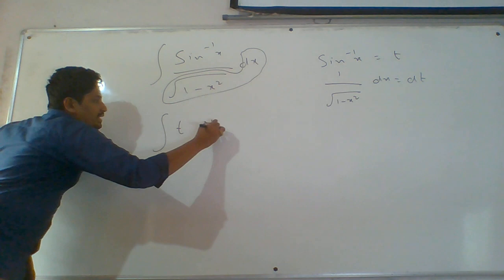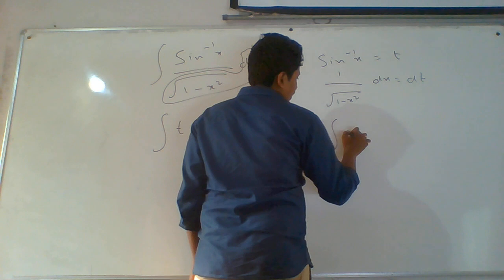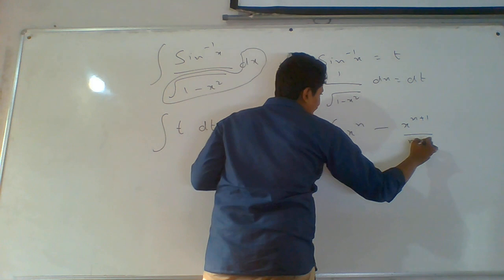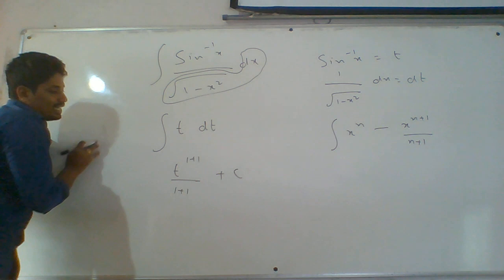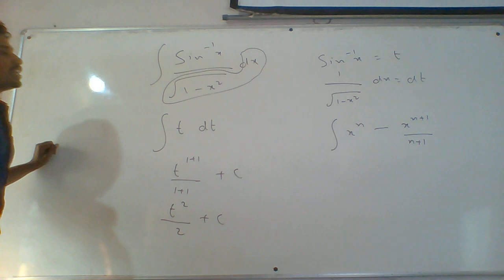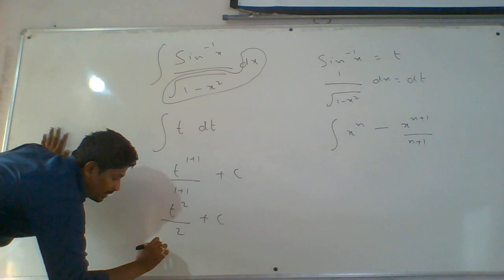This is of the form x power n. If nothing is shown, assume power is 1. It will convert to x power n formula: x power n plus 1 by n plus 1. Here t power 1 plus 1 by 1 plus 1 gives t squared by 2 plus c. The final answer should be in terms of x, so substitute sin inverse x back in place of t.